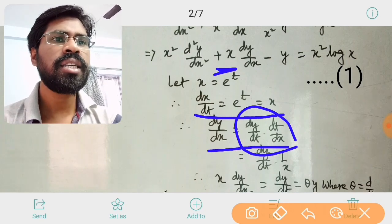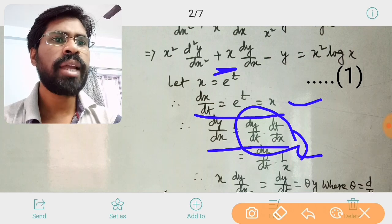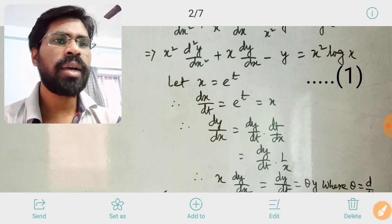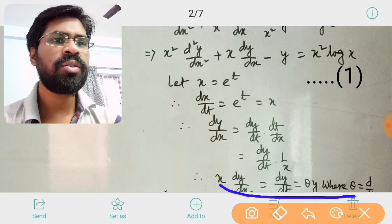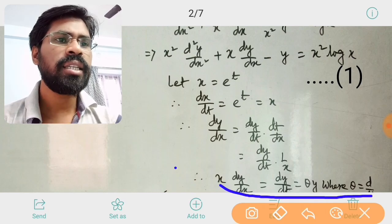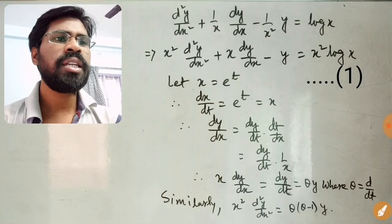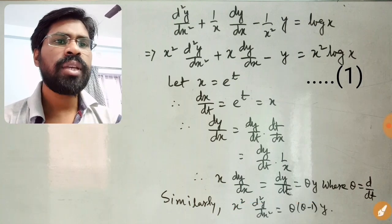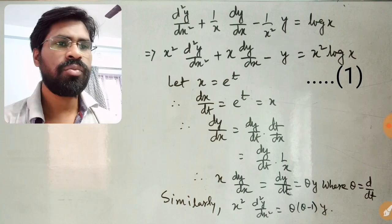Since dx/dt = x, therefore dt/dx = 1/x. So we get dy/dx = dy/dt = θy, where θ = d/dt. Similarly, we can get x²·d²y/dx² = θ(θ − 1)y.